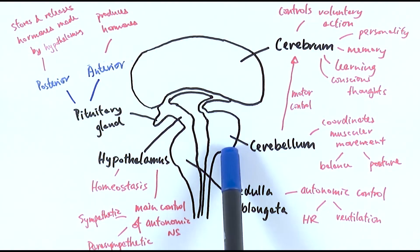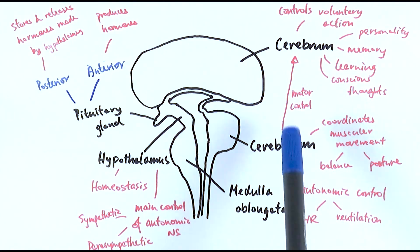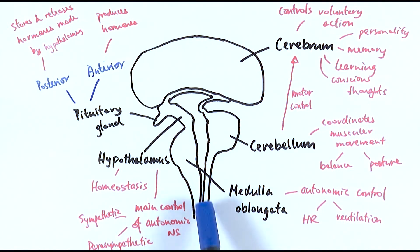Then we've got this part which is the cerebellum which coordinates our muscular movement and can work with the cerebrum to control how we move. Then we've got the medulla oblongata here which is responsible for autonomic responses of things like controlling our heart rate and ventilation rate.